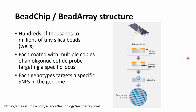Looking at SNP chips up close, we find hundreds of thousands of tiny wells, as shown on the right side of the screen. In these wells there are beads — hence the name bead chip or bead array. Each of these wells and beads is coated with multiple copies of oligonucleotide probes targeting a very specific locus on the genome, designed to capture a very specific SNP for the particular species for which the chip is developed.